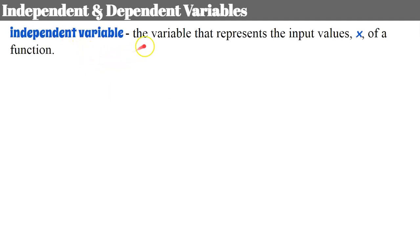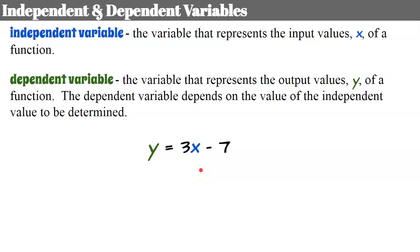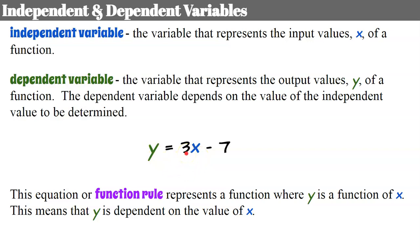Let's talk about independent and dependent variables. An independent variable is a variable that represents the input values, or X, of a function. A dependent variable is the variable that represents the output values, Y, of a function — the dependent variable depends on the value of the independent variable to be determined. So our Y is dependent on our X. Looking at a linear equation — also called a function rule — Y is a function of X, meaning Y is dependent on the value of X. We input a value for X, and that determines Y.